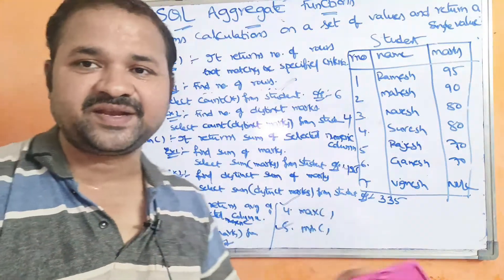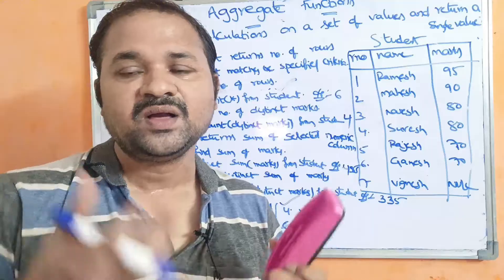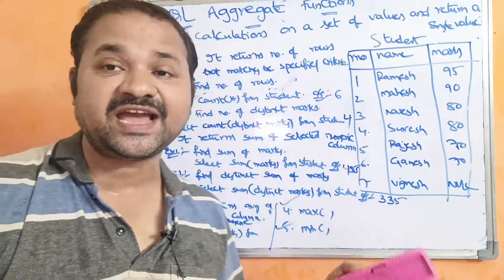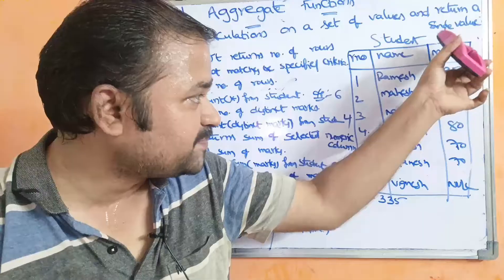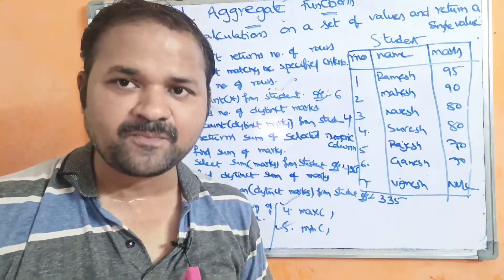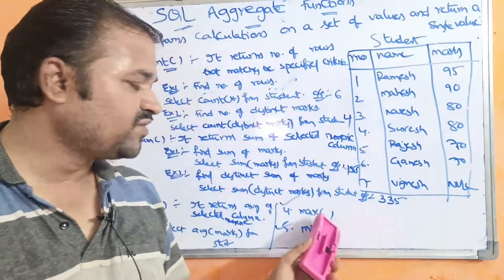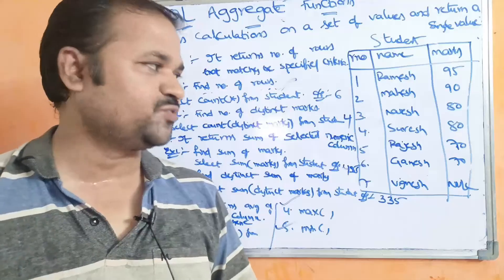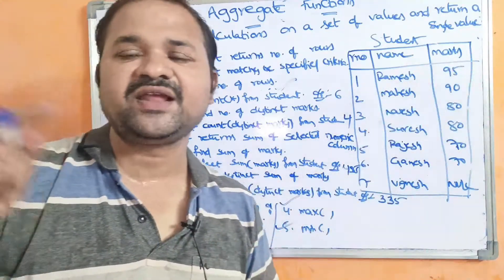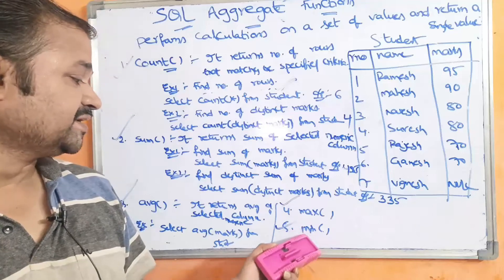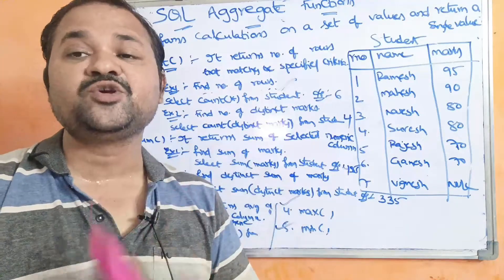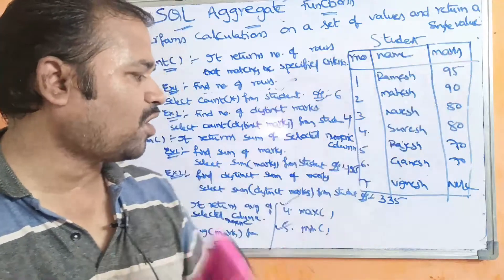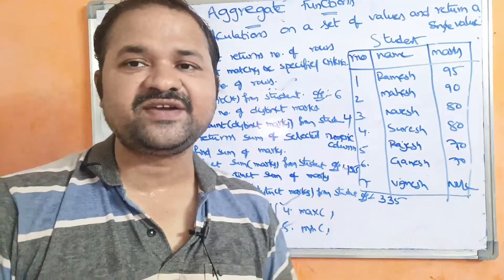The last two functions are max and min. By using the max function we can calculate the maximum value on a specific column. The query SELECT MAX(marks) FROM student returns 95 as the output. The min function returns the minimum of a selected numeric column. The query SELECT MIN(marks) FROM student returns 70 as the output.